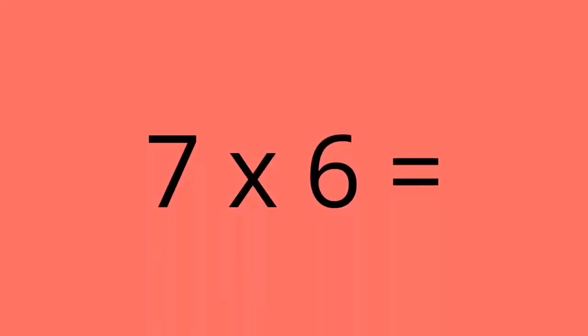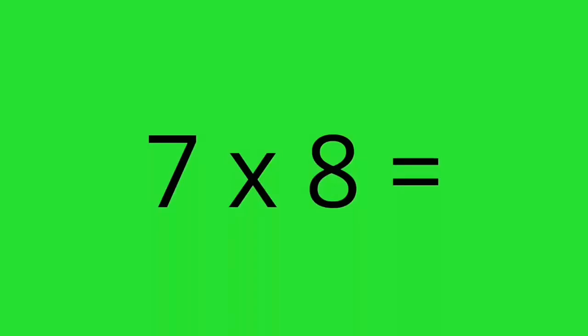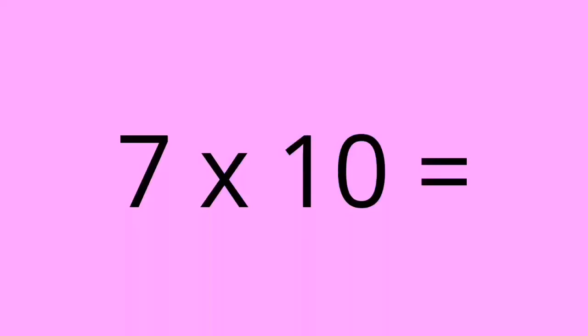7 times 6 equals 42. 7 times 7 equals 49. 7 times 8 equals 56. 7 times 9 equals 63. 7 times 10 equals 70.